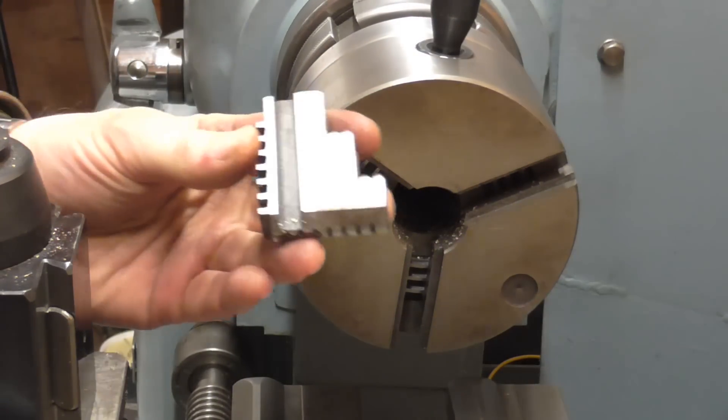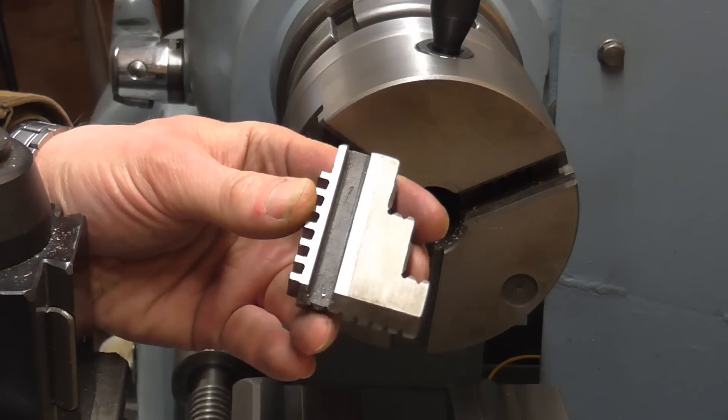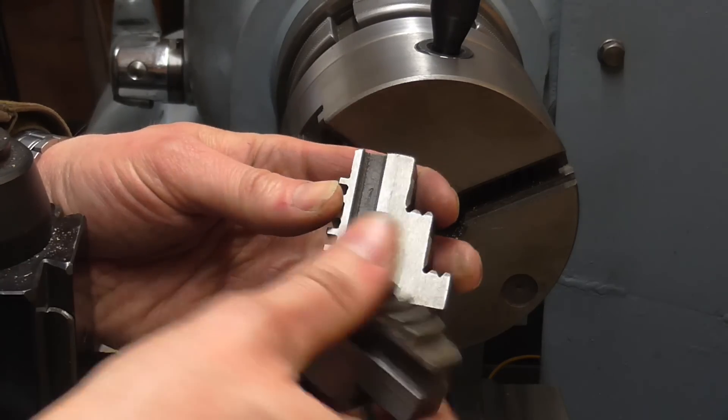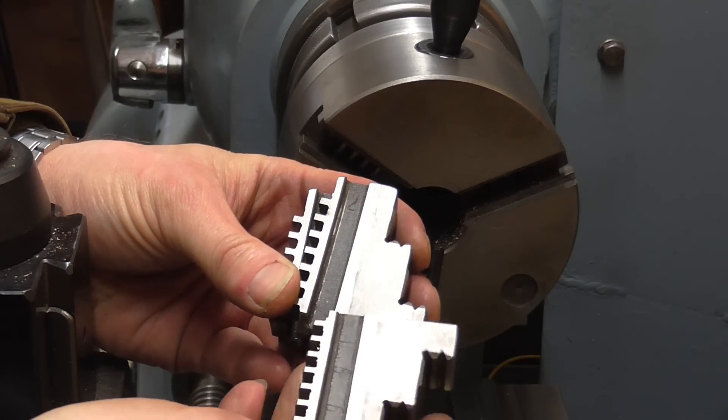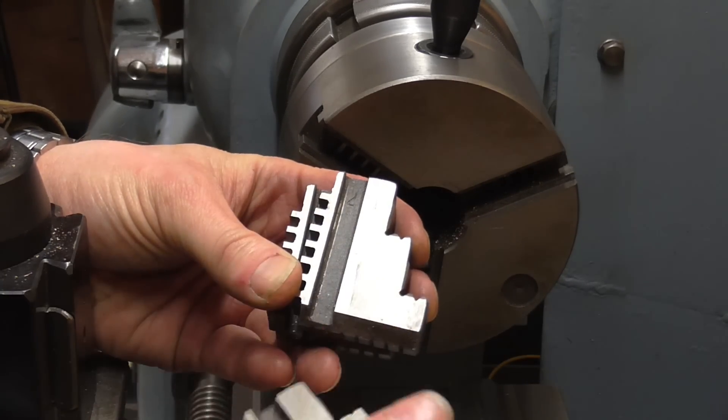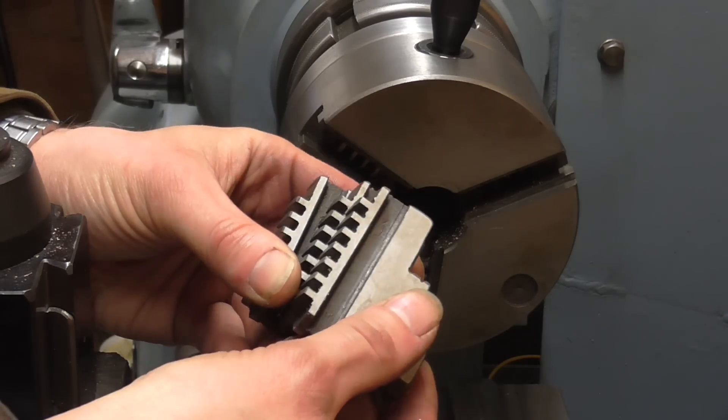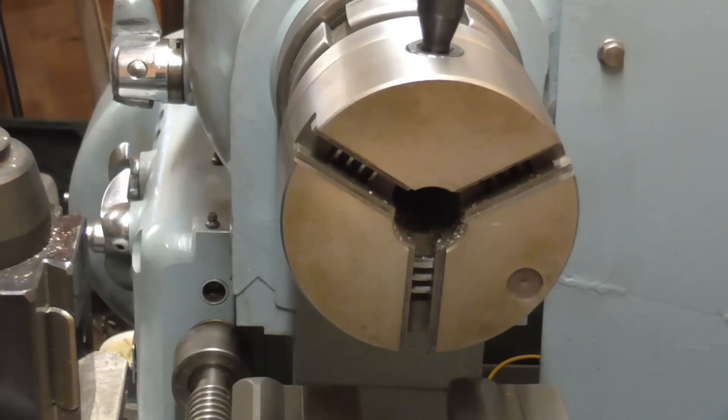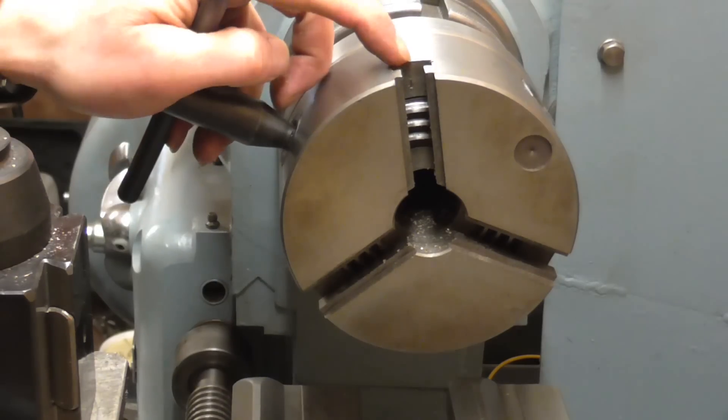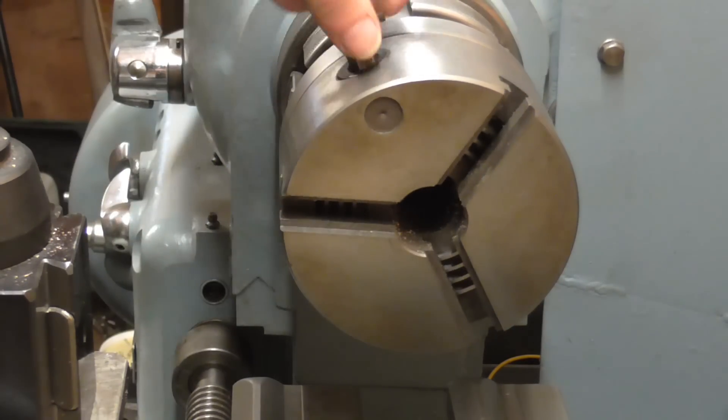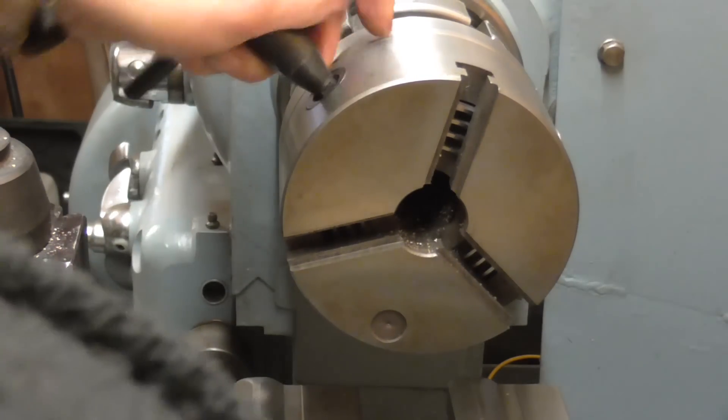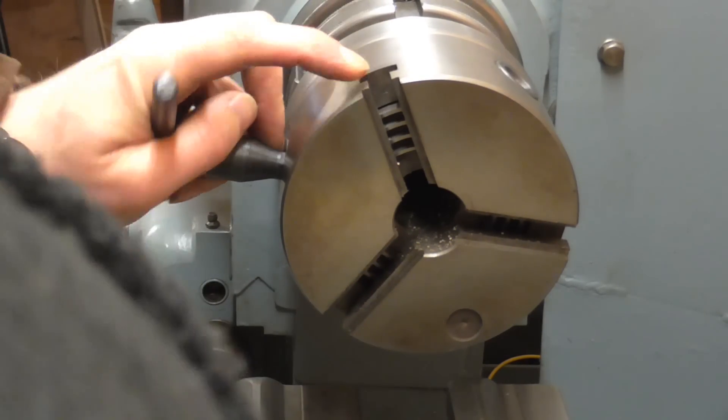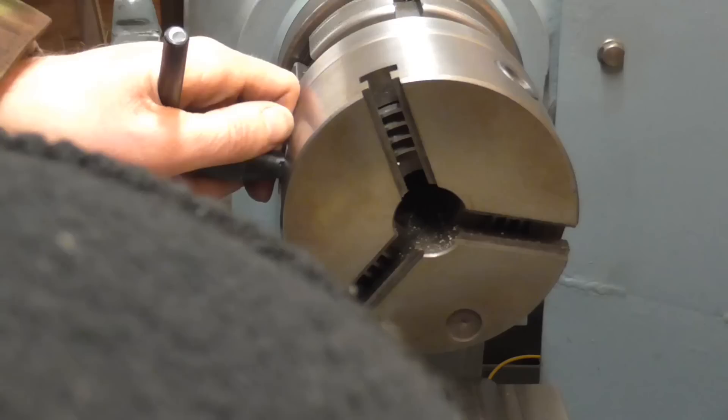And these jaws aren't the best marked ever but there's a one there, that's the two, and that's the three. Come into neutral, that's slot number one, that's number three and that's number two. There is a number stamped in the back there.